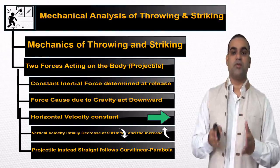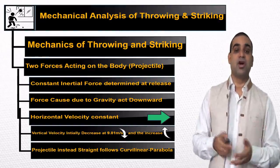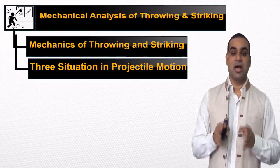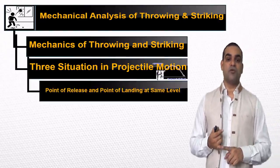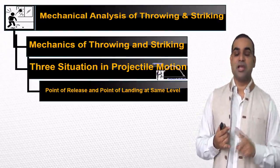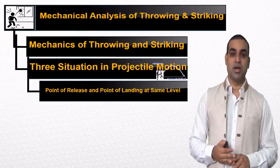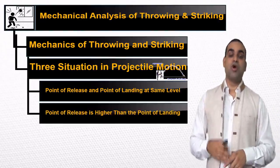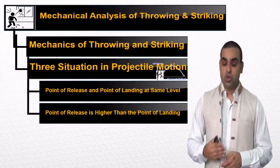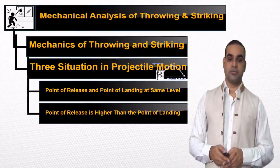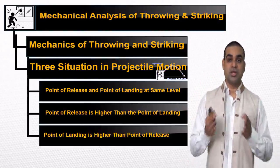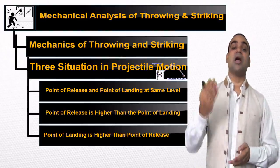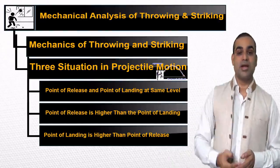In striking, we generally face some difficulty because we don't have control on that one. There are three situations of projectile — prakshepiya gati mein teen alag-alag sthitiyan hoti hain. First, the point of release and the point of landing are at the same level. Second, the point of release is higher than the landing. Third, the point of landing is higher than the point of release — jahaan woh land kar raha hai, woh ooncha hoga jahan se release kiya tha.